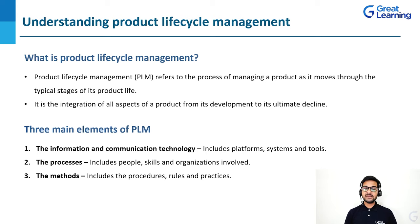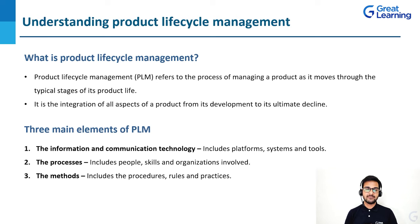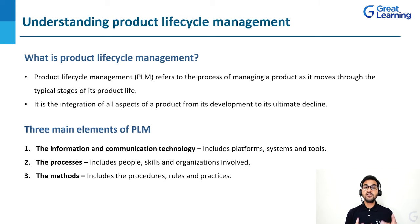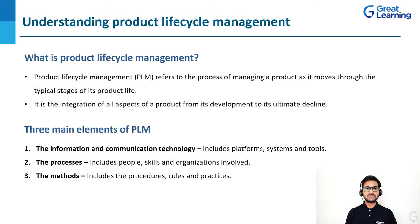There are three main elements of PLM. Number one is information and communication technology, which includes platforms, systems, and tools — there are many softwares for PLM. Second is processes, which includes people, skills, and organizations involved in product life cycle management. Third is methods — the procedures, rules, and practices. Even if you are designing a product, there will be procedures you must follow, rules and regulations, and potentially government rules as well. These three elements — ICT, processes, and methods — are very important in PLM.